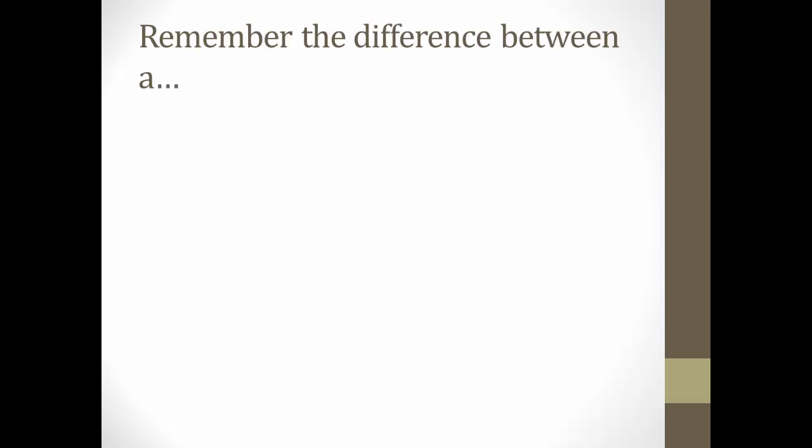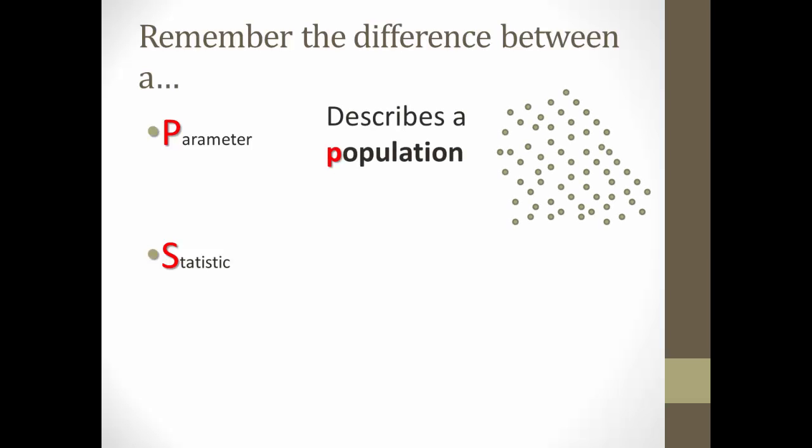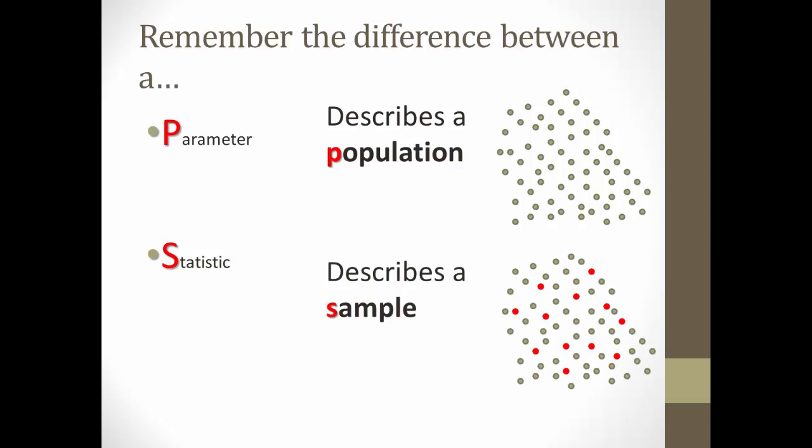I'm sure you all remember that there is a difference between a parameter and a statistic. A parameter describes a population, the entire population, while a statistic describes a sample of the population. Another way to think of it is that a statistic is used to generalize what the parameter is. We estimate parameters based upon statistics.